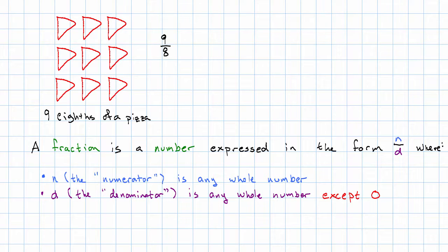The number on the bottom, which I called d, is called the denominator, and that can be any whole number except for zero.